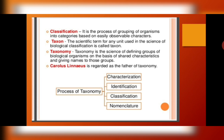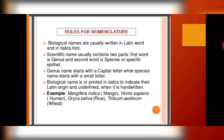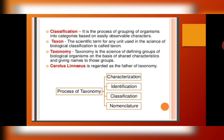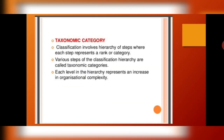How is taxonomy done? First, characterization — identify what characters need to be analyzed. Second, identification — out of a bunch of organisms, identify which organism has those particular characters. After identification, do the classification, divide them into separate groups, and then do the nomenclature. When you know the particular class, you can easily name that particular organism.